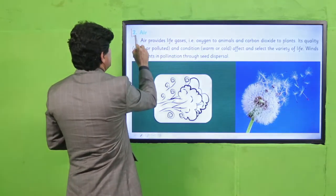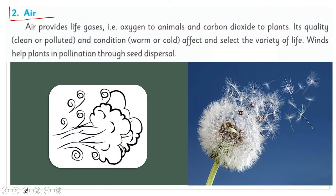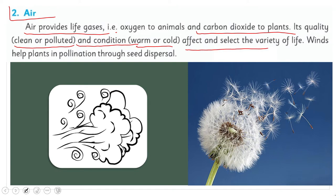Air is the second most important abiotic factor. Air provides life gases — for example, oxygen to animals and carbon dioxide to plants. Its quality — clear or polluted — and condition — warm or cold — affect and determine the variety of life. Winds also help plants in pollination through seed dispersal.